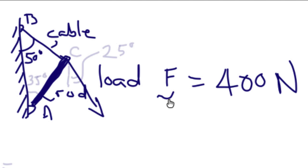Now, the orientation of the structures are given, so the angle between the cable and the wall is 50 degrees. The angle between the rod and the wall is 35 degrees. And the angle between the load and the vertical is 25 degrees.